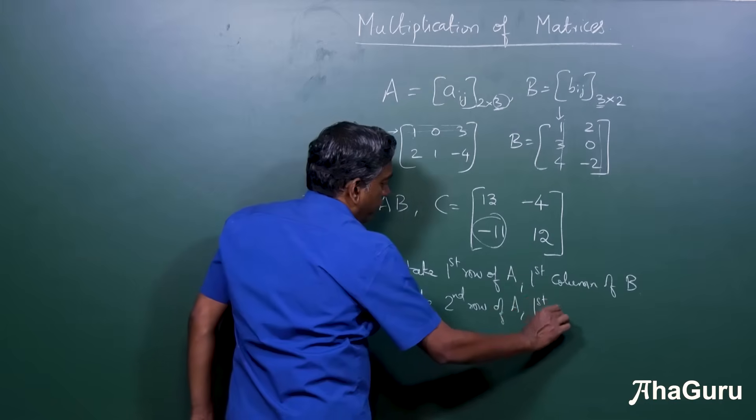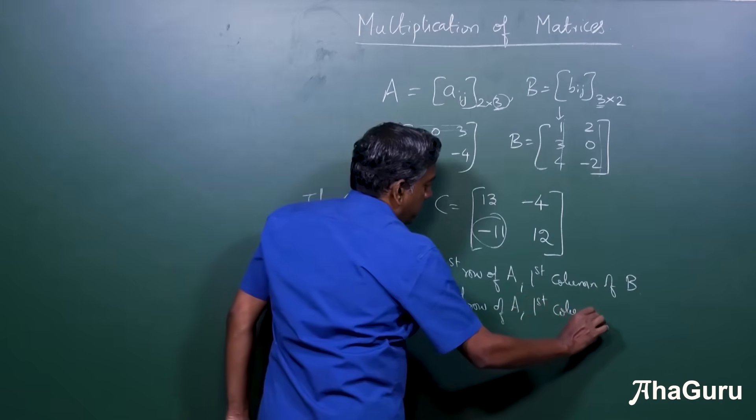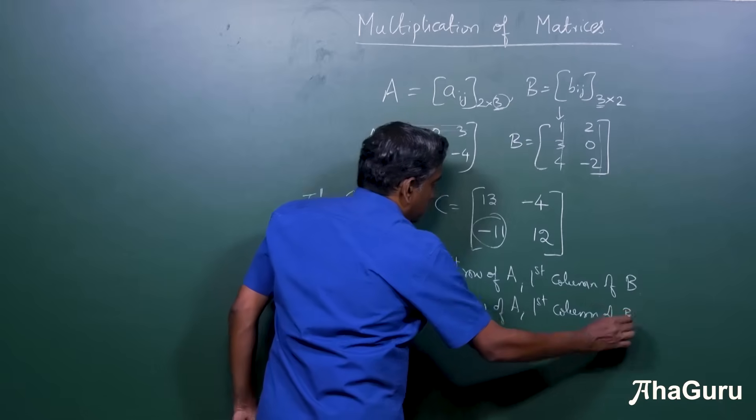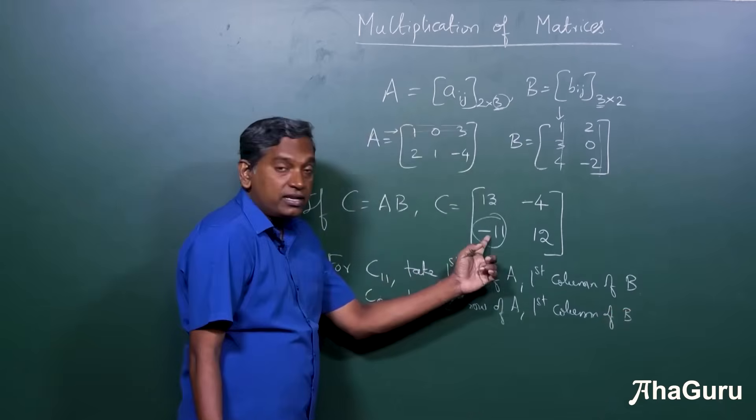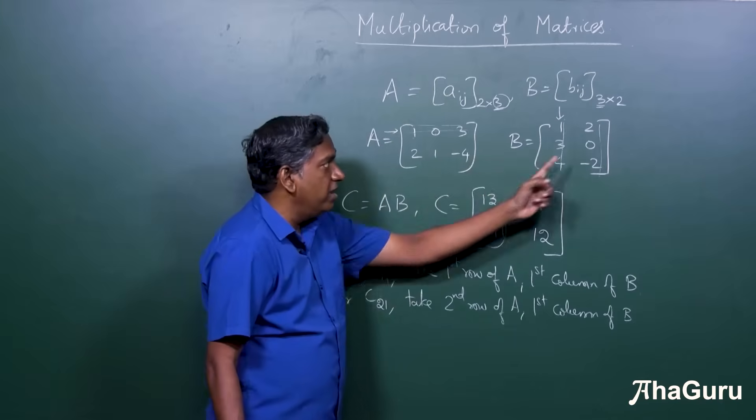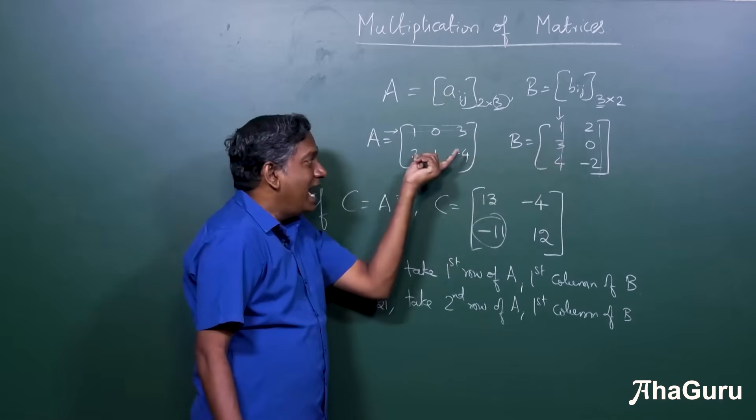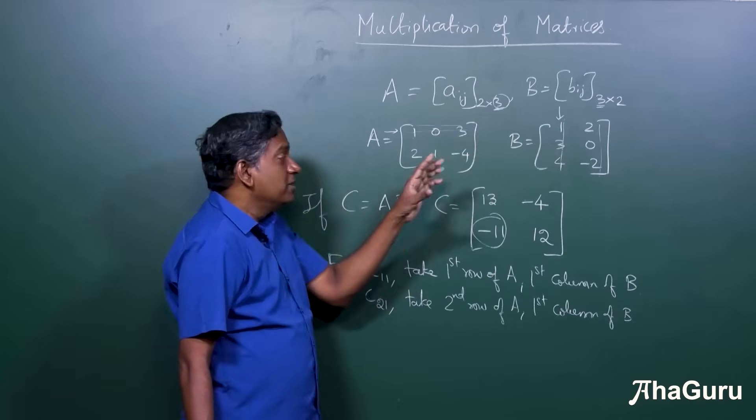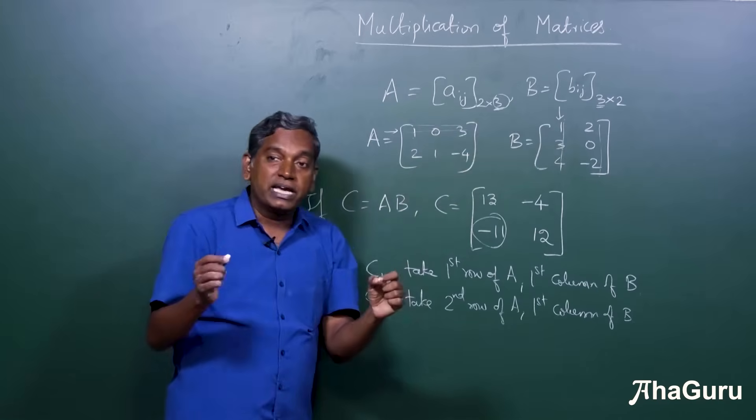So the idea is, C21, which is this entry, is obtained by taking the second row of A, first column of B and multiplying term by term.